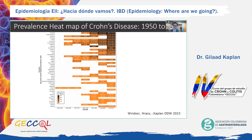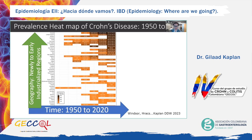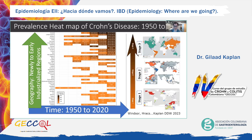This heat map displays the prevalence of Crohn's disease. The y-axis shows countries from newly industrialized to early industrialized countries of the Western world, and the x-axis shows decades from 1950 to 2020. You can see a transition from stage one to two to three. As your eyes focus on the top right-hand corner, you see that prevalence is consistently increasing across time, particularly among early industrialized countries of the Western world.